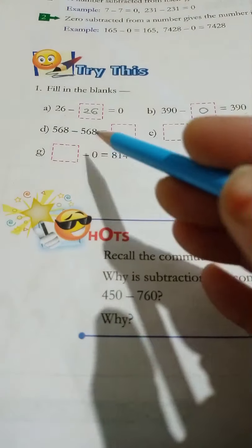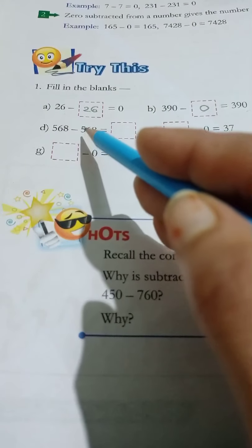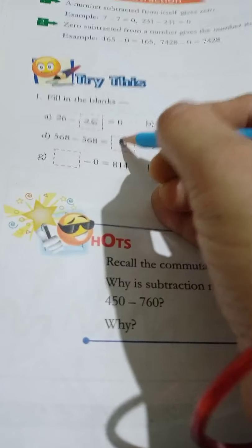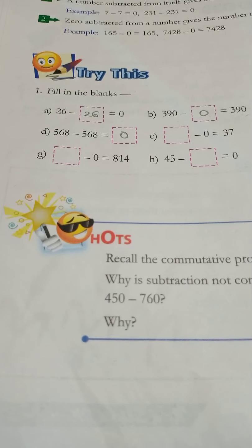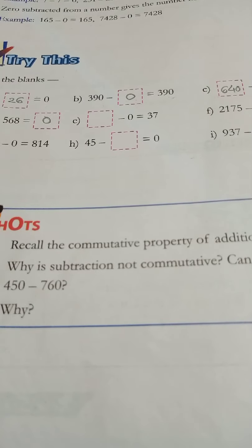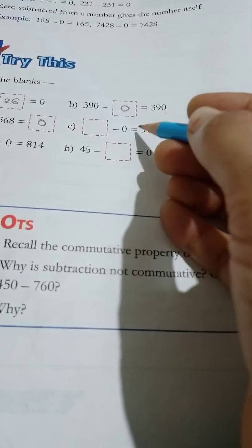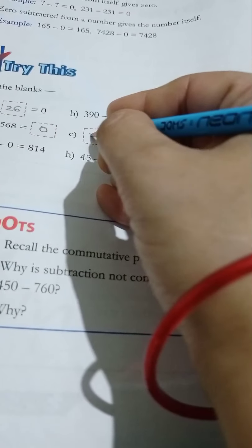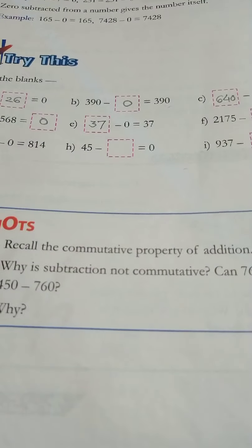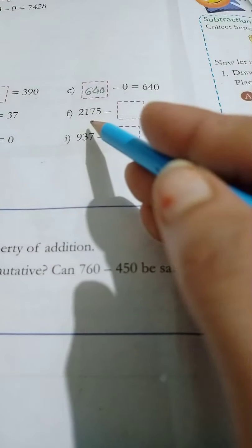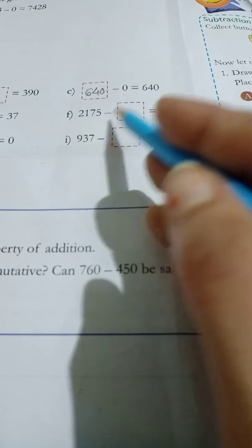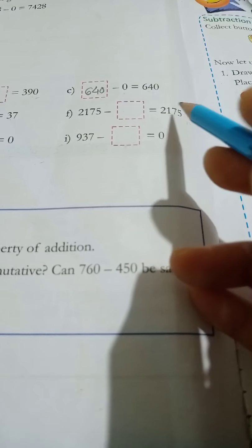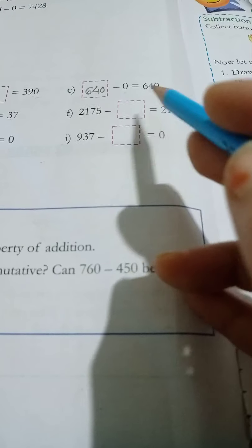C: blank minus 0 is equal to 640. Again, second rule: 0 subtracted from a number gives the number itself. So here, write 640 minus 0 is equal to 640. D: 568 minus 568 is equal to 0 — a number subtracted from itself gives 0.